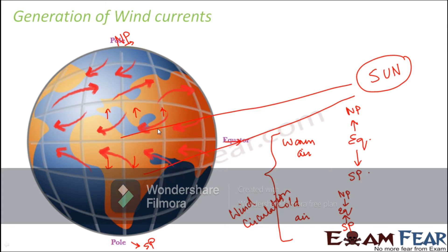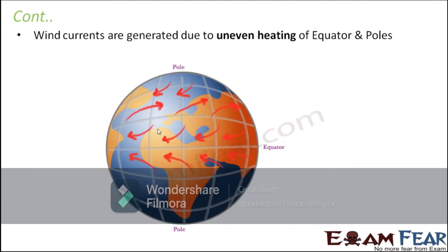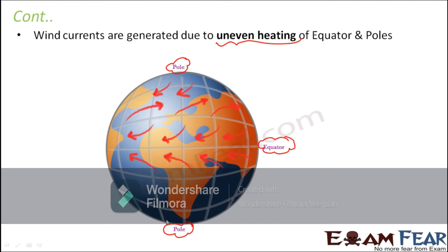So what is the factor that led to the generation of wind currents? The primary factor responsible was nothing but the uneven heating of the earth — that is, the equator is more heated compared to the poles. This happens because of the shape of the earth. Since the earth is spherical, the sun provides more heat to the equator and less heat to the poles. Due to this difference in heating, air circulation takes place, resulting in wind currents. Uneven heating is the main cause behind the generation of wind currents.